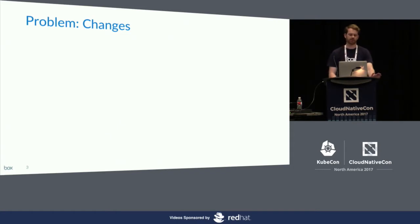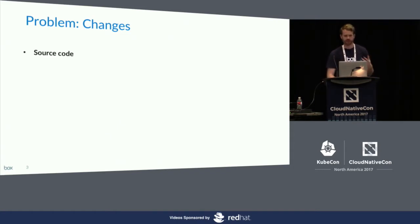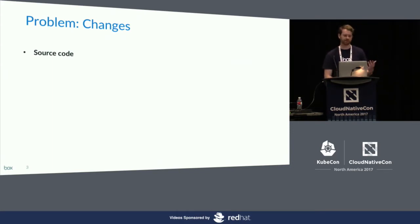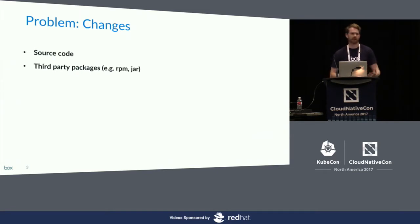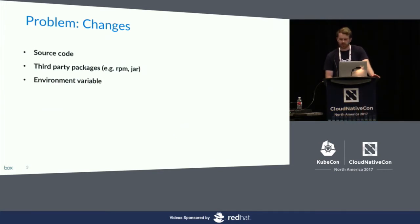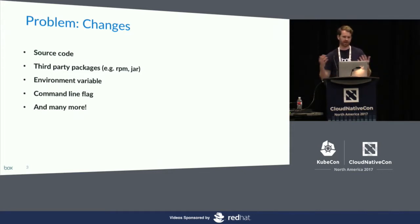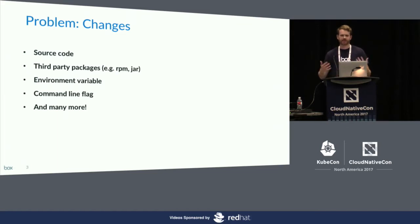When I say changes to a service running on Kubernetes, I could be talking about a bunch of different things. It might be a change to source code — if you have an app written in Go or Java and you're adding a new feature. This might be a change to some third-party package, or upgrading a version of some RPM. It might be some config parameters like an environment variable or a command line flag. The list could keep going — there are many different types of changes we might need to make to our service at any point, and we really care about all of them.